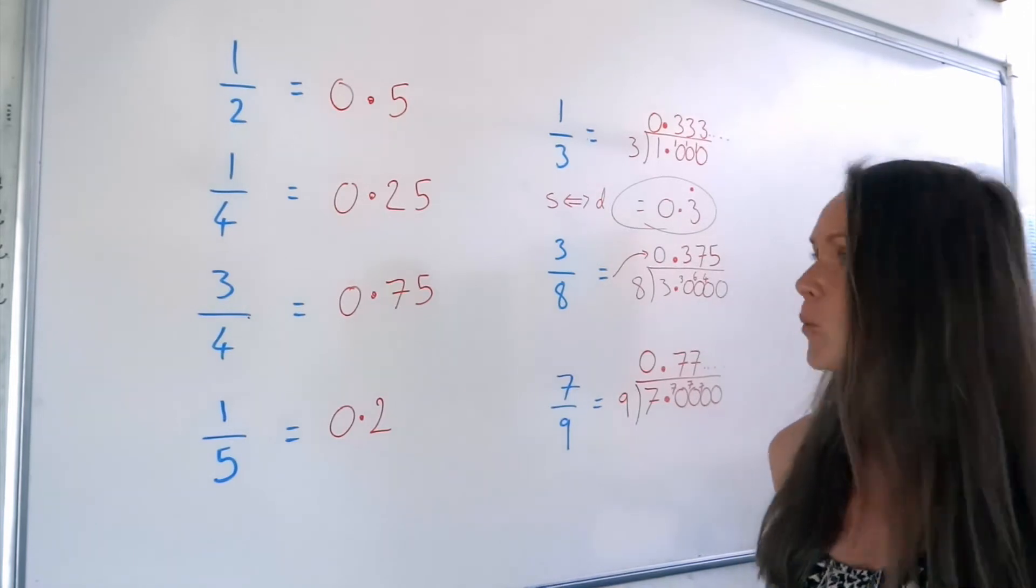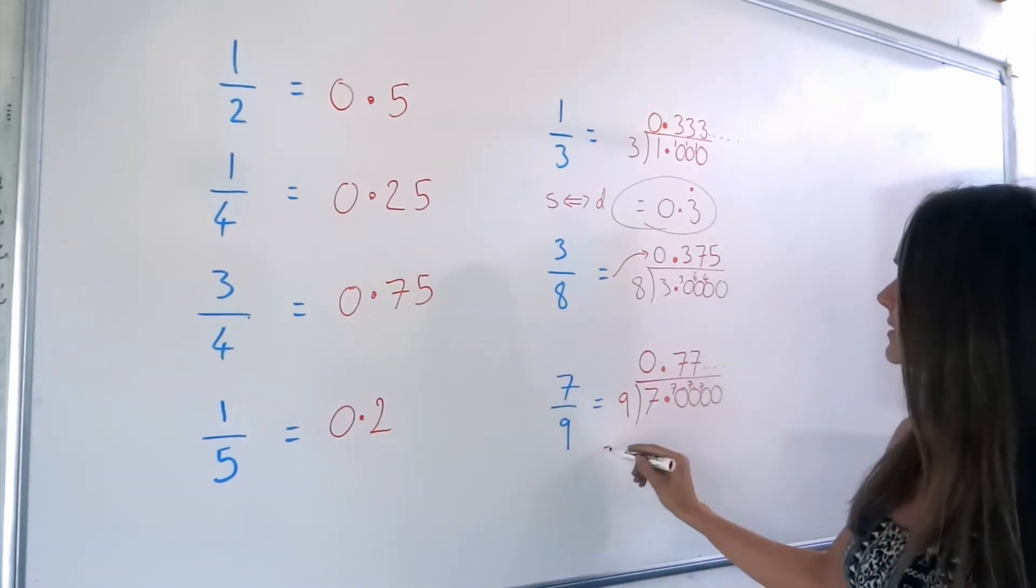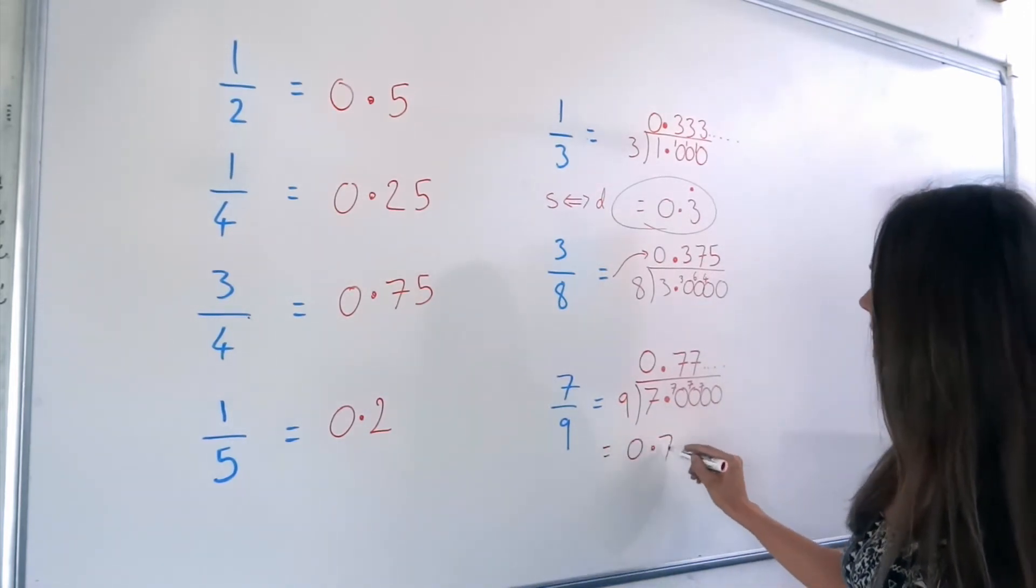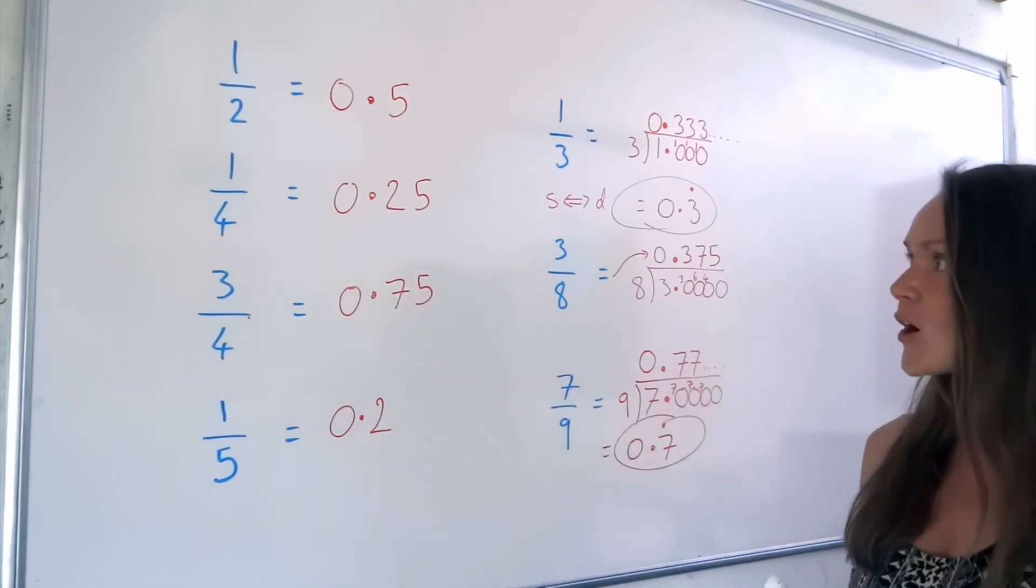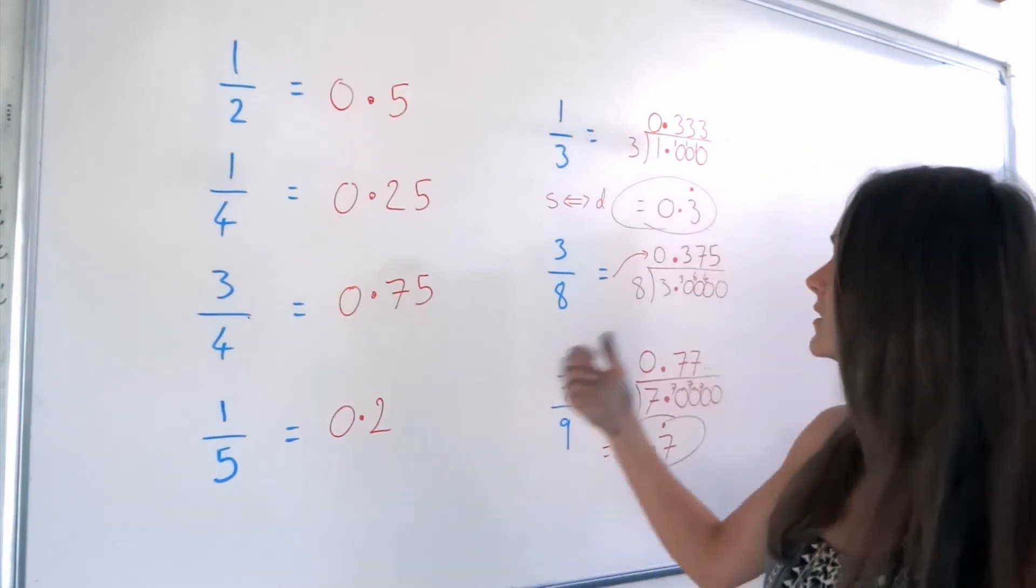So remember what that's called. We say it's 0.7 recurring. So you can stop there. So there you go. Turning fractions into decimals.